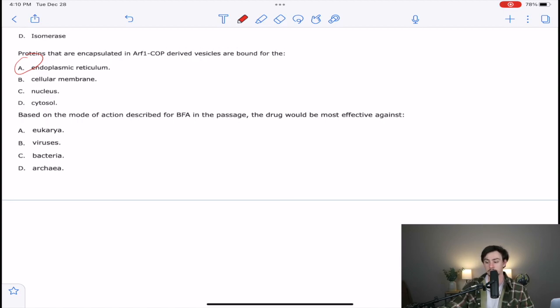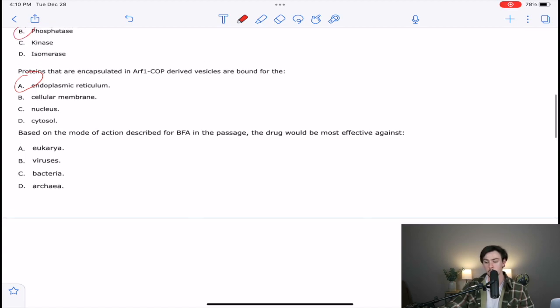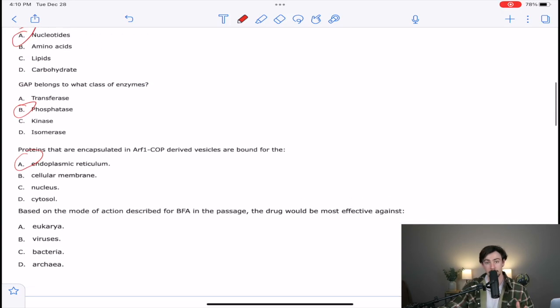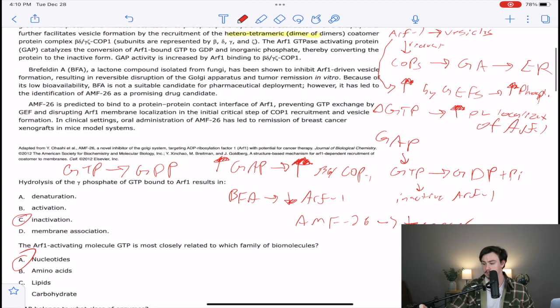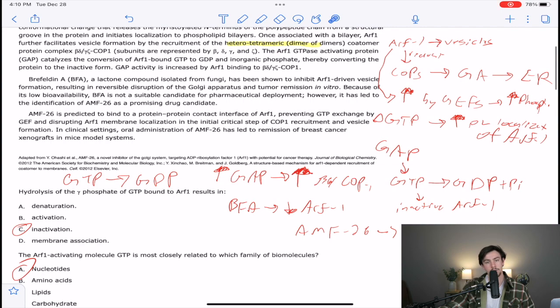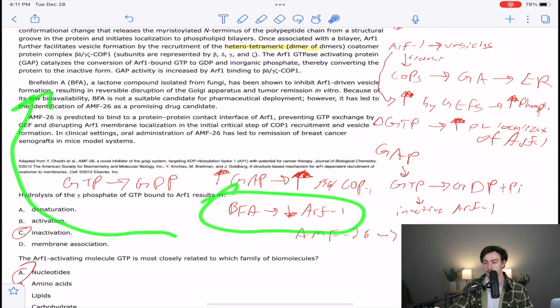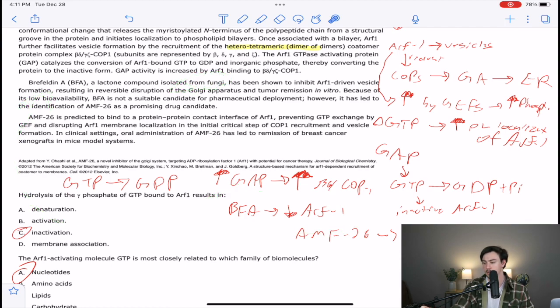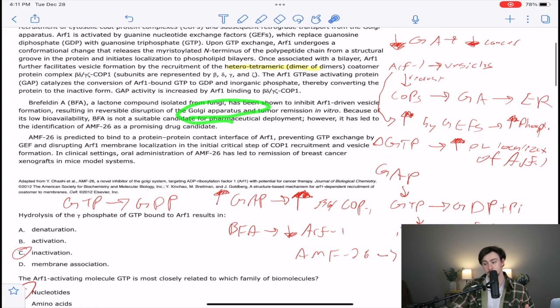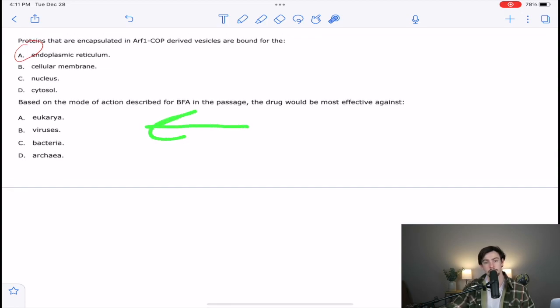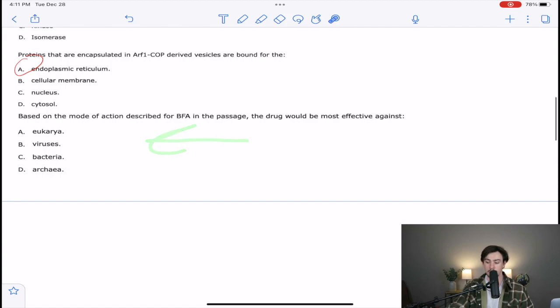And the very last one says, based on the mode of action described for BFA in the passage, the drug would be most effective against what? So now we have to see what BFA is and what it's acting on. So let's go find it. It says that BFA decreases ARF-1. So I am going to have to go back into the passage because that doesn't answer the question yet for me. So I'm going to go back up here to where we're talking about BFA. It says it's derived from fungi. It inhibits ARF-1-driven vesicle formation and disrupts the Golgi. So if we're disrupting the Golgi apparatus, which of these has a Golgi apparatus? There's only one of them. The correct answer here would be eukarya. Viruses don't have a Golgi apparatus. Bacteria don't have membrane-bound vesicles, so they don't have a Golgi apparatus. And archaea don't have a Golgi apparatus either.